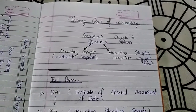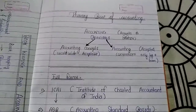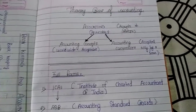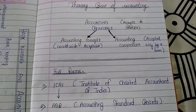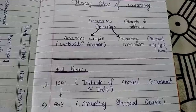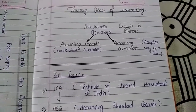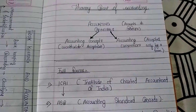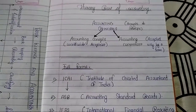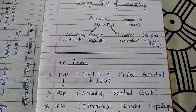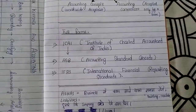Accounting principles are of two types: accounting concept and accounting convention. Accounting concept is something acceptable by all the world — it is worldwide acceptable. Accounting convention, on the other hand, is accepted only by a firm; like a company that accepts particular rules and regulations is doing accounting convention.